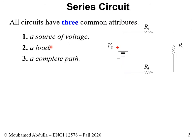A circuit, by definition, will have three components. It will have a source — the source is what feeds the entire circuit, it is the energy source. It has a load: a load could be the different components connected, in this case resistors. And you should also have a path — the wire that connects the different components in order to have a closed loop for electrons to flow. So the requirements for a circuit are a source, a load, and a path.